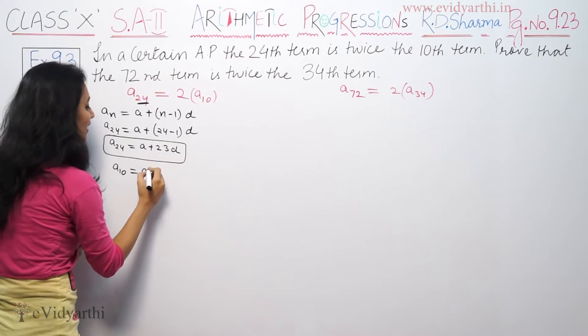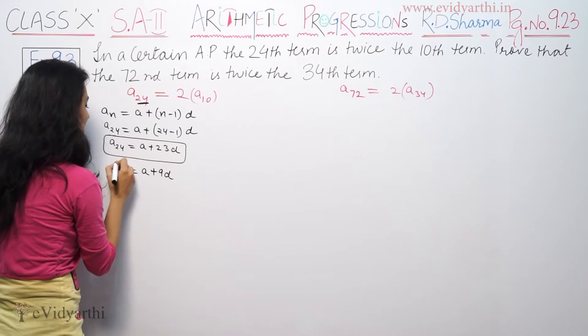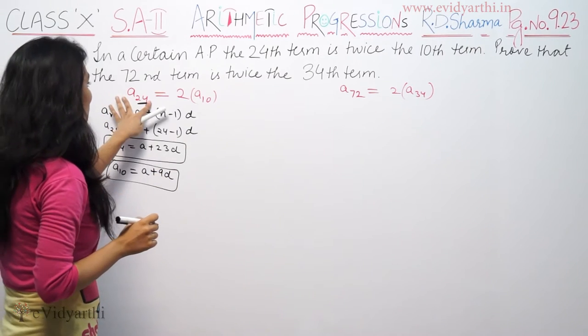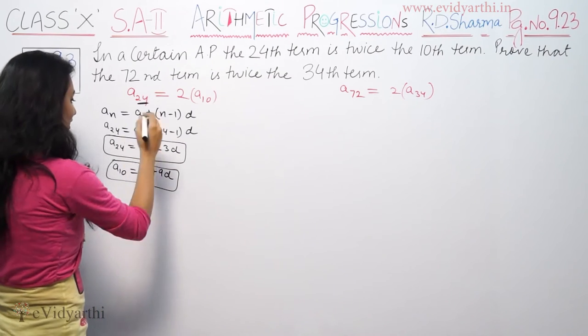A plus 23D is equal to twice of 10th term. A10 is A plus 9D. This is the equation. So A24 is twice of this. A10 we write it in brackets.